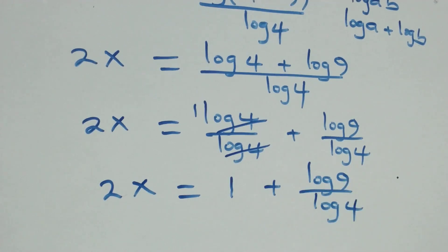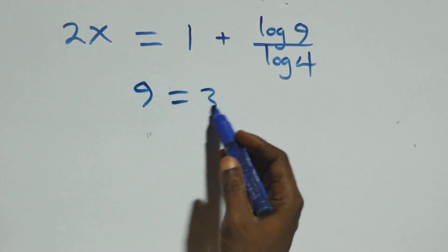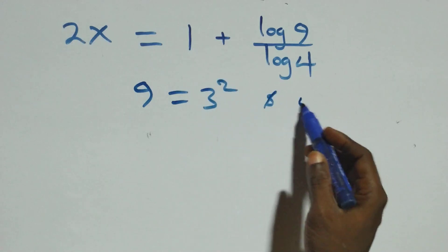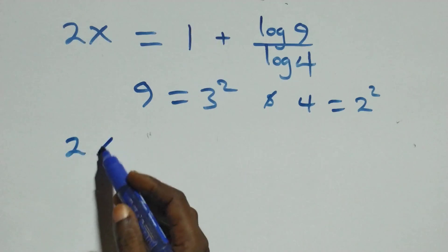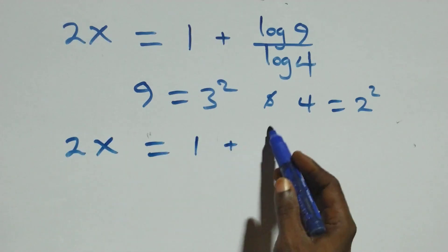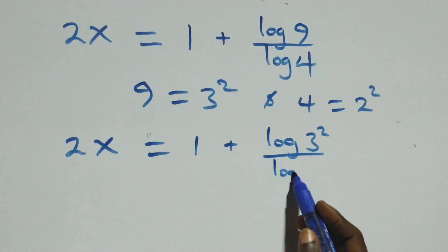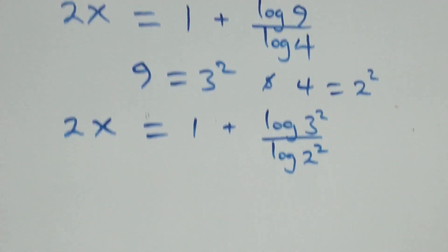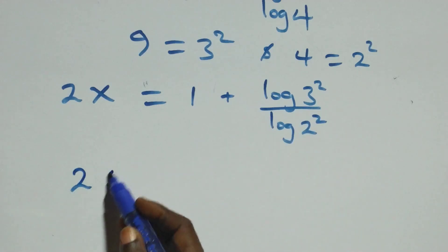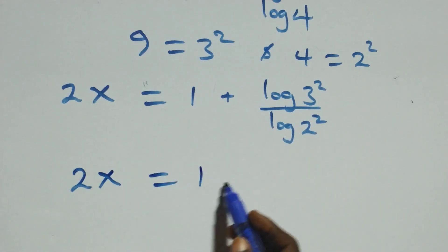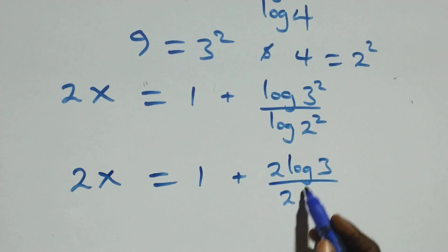Then from here, we can express 9 as 3 times 3, that's 3 squared, and also 4 as 2 times 2, that's 2 squared. So all we have becomes 2x equals to 1 plus log 3 squared over log 2 squared. Then we apply the power rule of logarithms: the 2 comes down, and we have 2x equals to 1 plus 2 log 3 over 2 log 2.